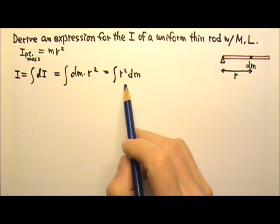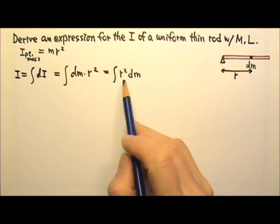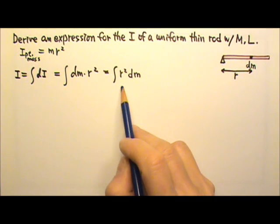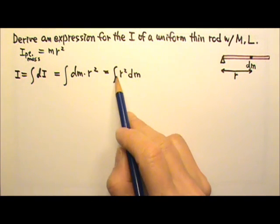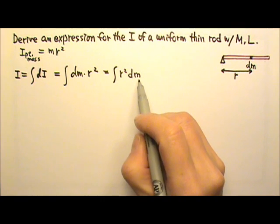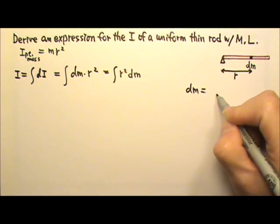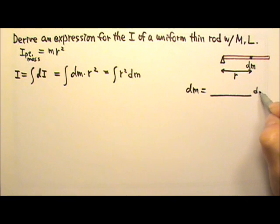This r is a variable. And we have r squared, a function of r here, but dm. In order for us to be able to integrate this, we have to have a function of r and dr. So we need to figure out how to rewrite this dm into something dr.